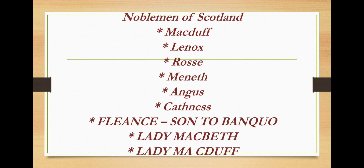After that we have the noblemen of Scotland: Macduff, Lennox, Ross, Meneth, Angus, and Caithness. They are not the most important characters but we still need to study about them. Next we have Fleance, the son of Banquo.